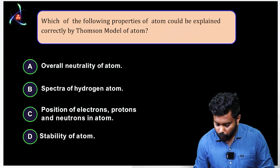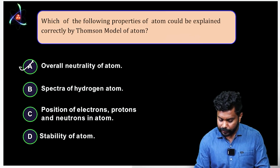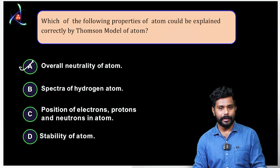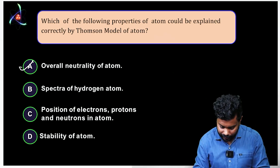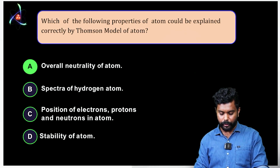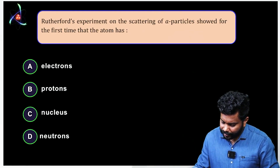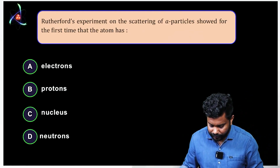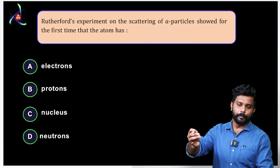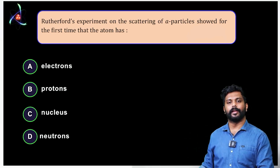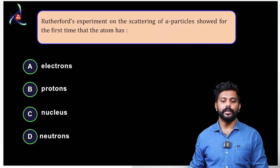Thomson mentioned the overall neutrality of the atom — he did not mention anything about the spectra of the atom. So the correct option is the overall neutrality of the atom. Next: the Rutherford experiment on scattering of alpha particles showed for the first time that the atom has most of its mass at the center, which is named as the nucleus.